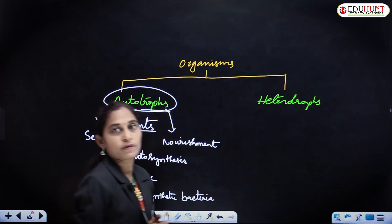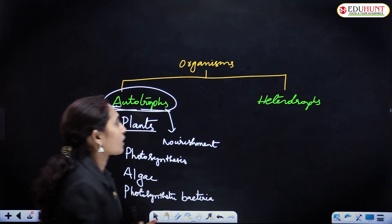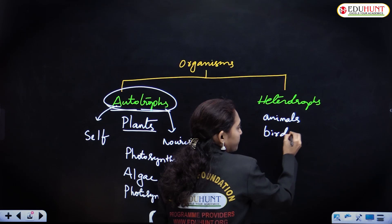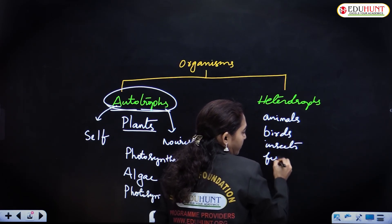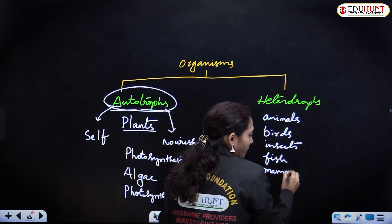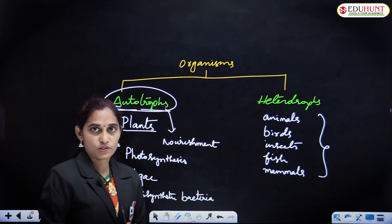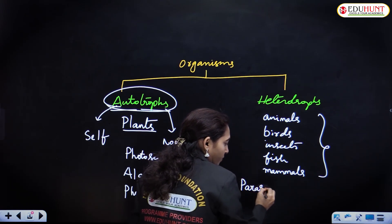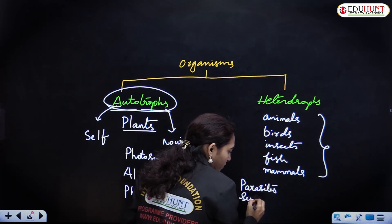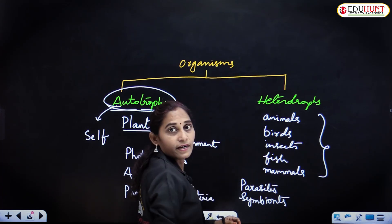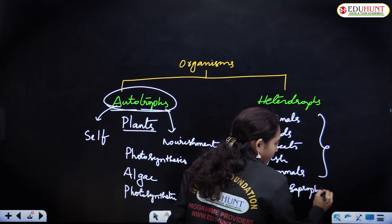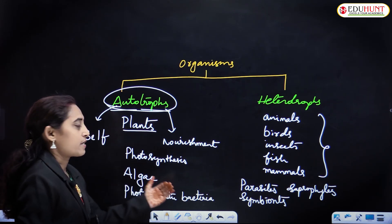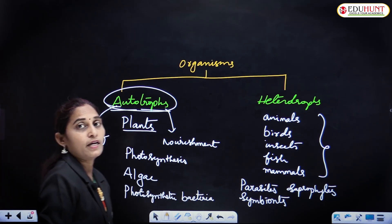In case of heterotrophs, they depend on other organisms for their food. These are animals — even birds, insects, fish, amphibians, reptiles, and mammals — all these organisms are heterotrophs. Again, heterotrophs are of different types: there are parasites, there are symbionts, and there are saprophytes. These are the different heterotrophic organisms.